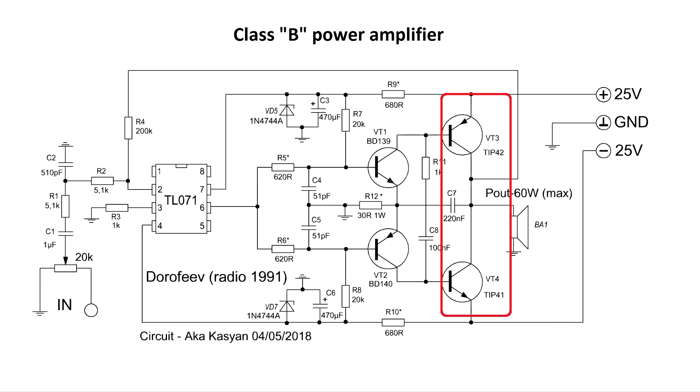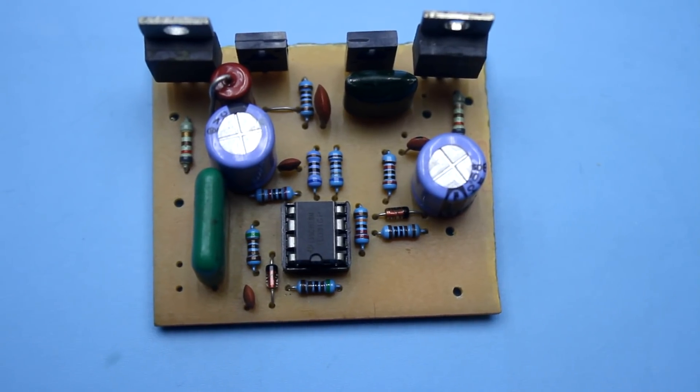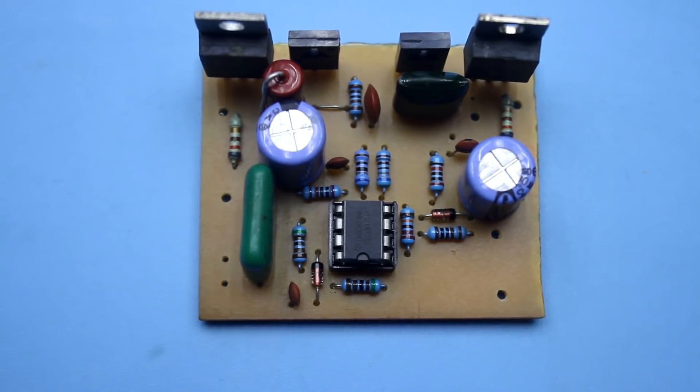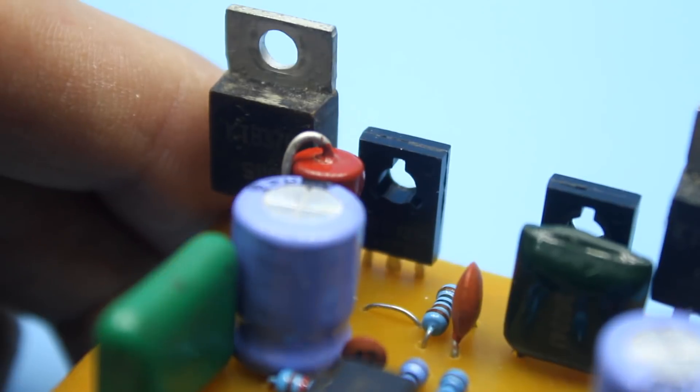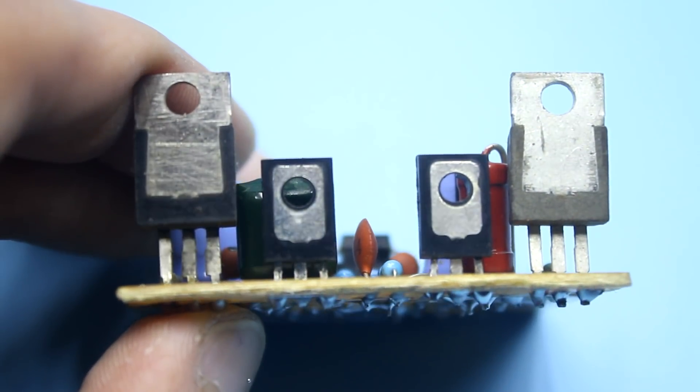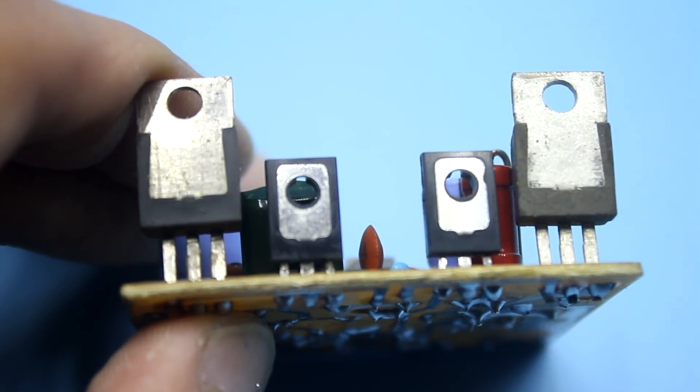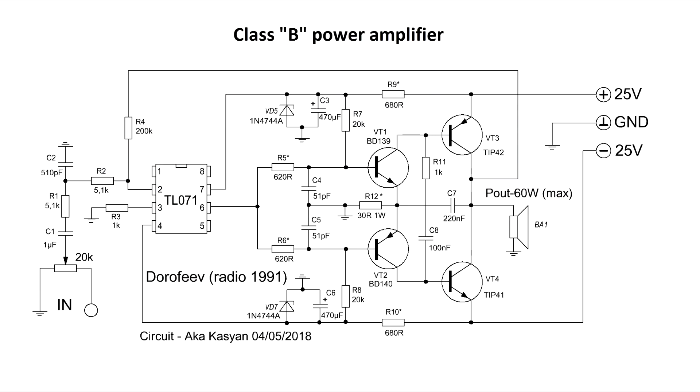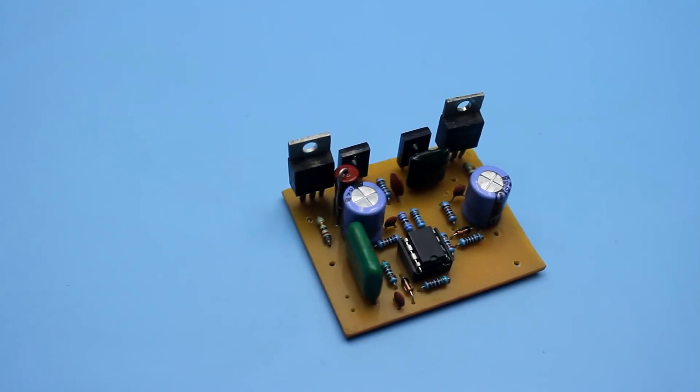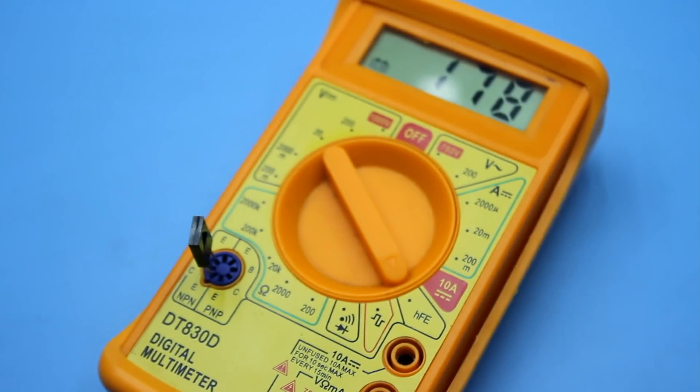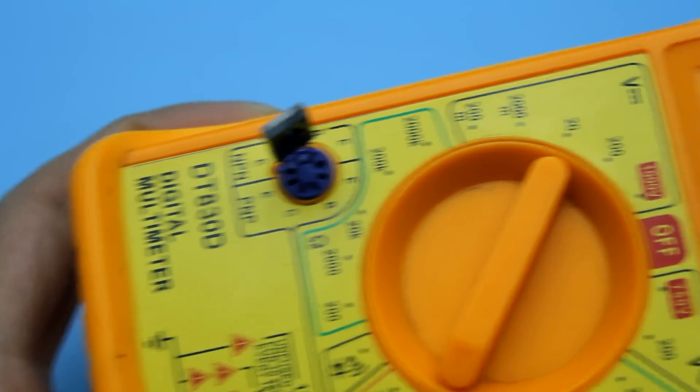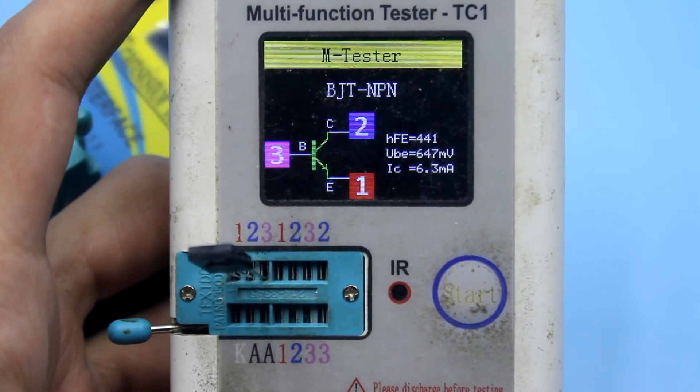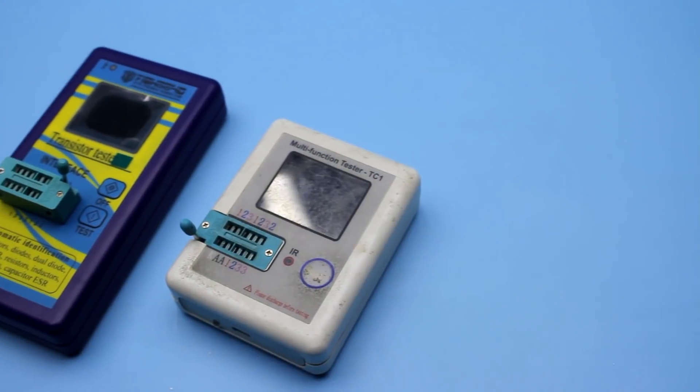In the output stage, it is worth using transistors with a dissipation power of at least 50 to 60 watts, with a collector-emitter voltage of at least 60 volts, or better 80 or 100, but it also depends on the supply voltage. As seen in the circuit in the output and pre-output cascade, complementary pairs of transistors are used. It is very desirable to choose transistors by gain factor. Some multimeters have a function to check this parameter, or you can use a transistor tester. Link to some samples will be found in the description.